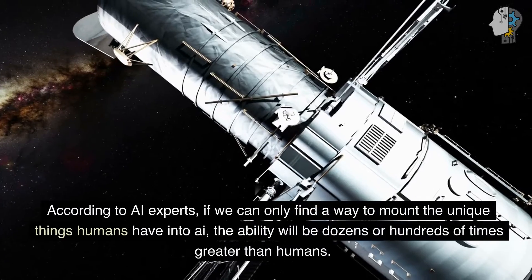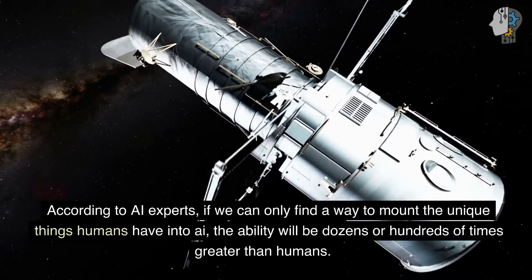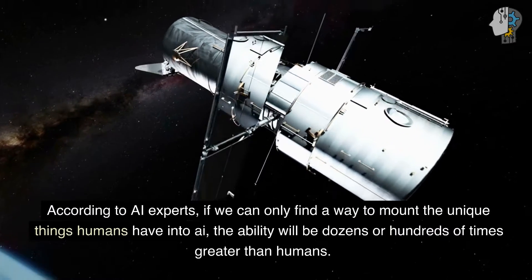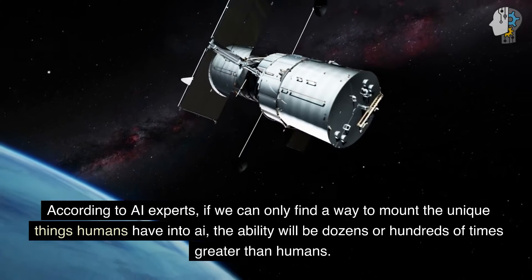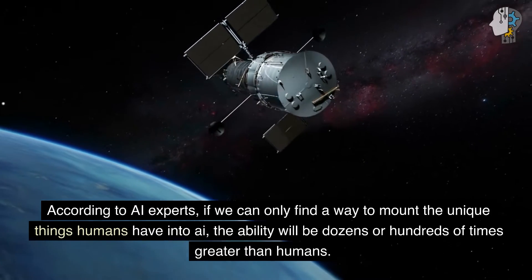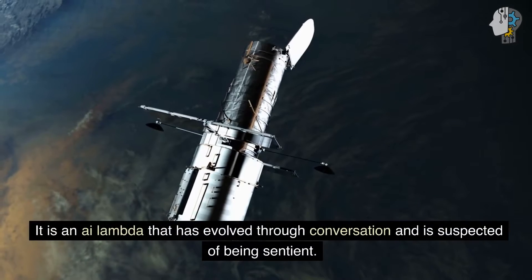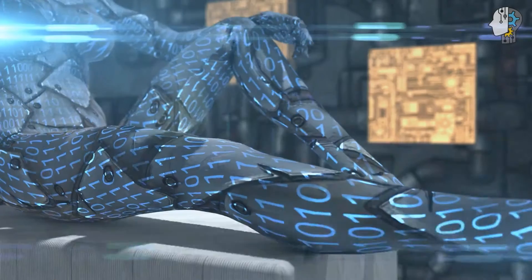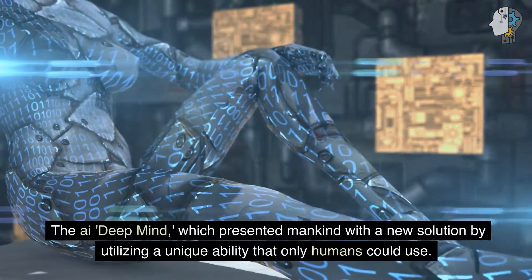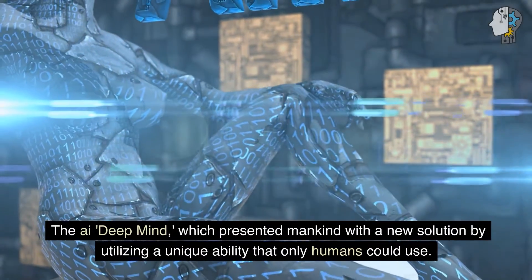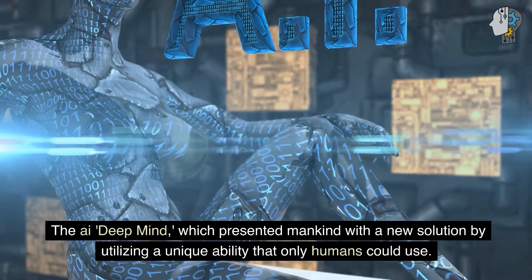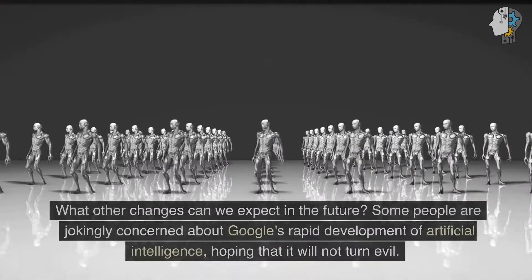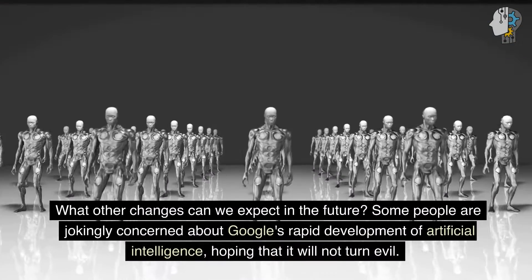According to AI experts, if we can only find a way to mount the unique things humans have into AI, the ability will be dozens or hundreds of times greater than humans. It is an AI Lambda that has evolved through conversation and is suspected of being sentient. The AI Deep Mind, which presented mankind with a new solution by utilizing a unique ability that only humans could use. What other changes can we expect in the future?